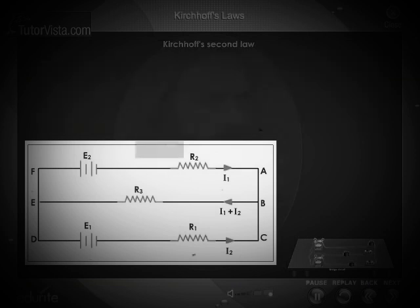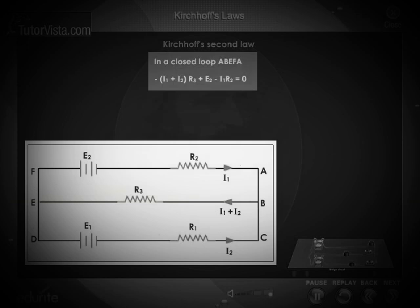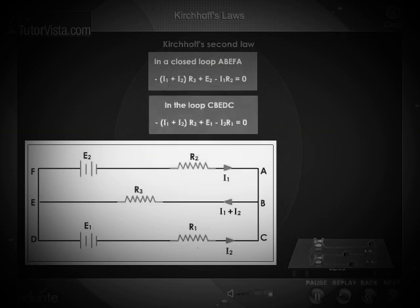Consider the circuit shown here. In a closed loop ABEFA: -(I1 + I2)R3 + E2(I1) - I1R2 = 0. In the loop CBEDC: -(I1 + I2)R3 + E1 - I2R1 = 0.